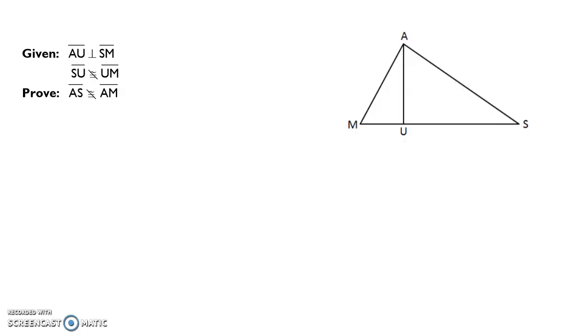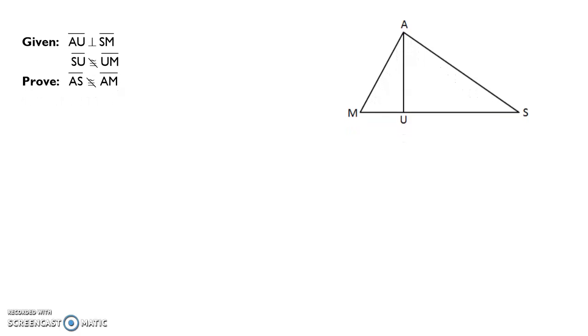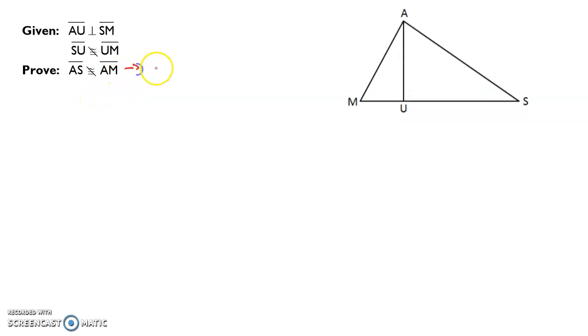All right, I think we want to take a look at one more together, and then I'm going to go ahead and let you guys try a few. So this one's going to be a little bit more piecemeal, but same idea. I look, and I'm asked to prove the two segments are not congruent. So the assumption I'm going to make is that they are, that segment AS is congruent to segment AM. I'm going to go down and start my paragraph proof that way. Assume segment AS is congruent to segment AM.